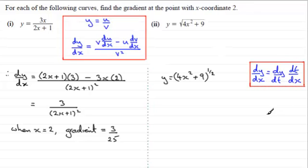So if I let t be 4x squared plus 9, I've got y equals t to the power half. So we'll just say let y equal t to the power half, where t equals 4x squared plus 9.